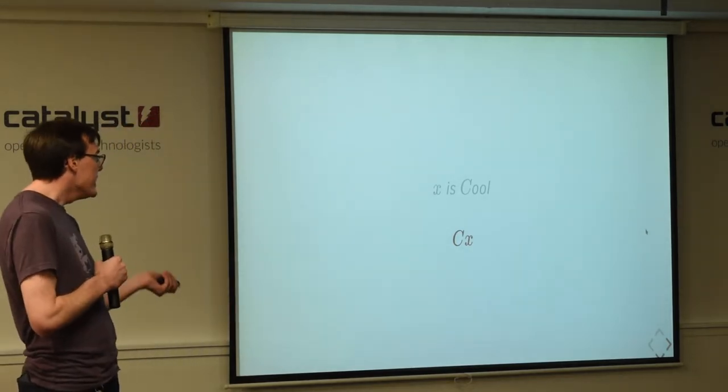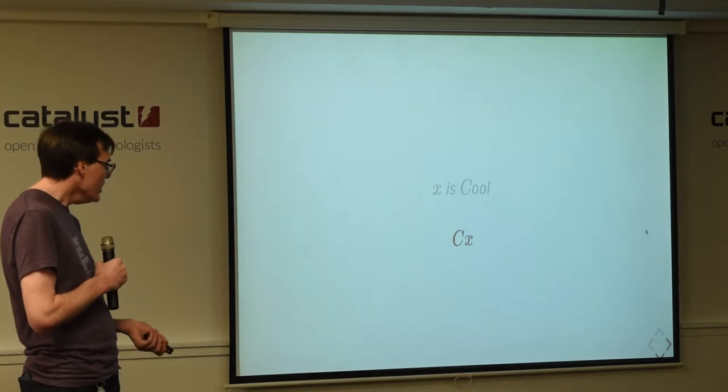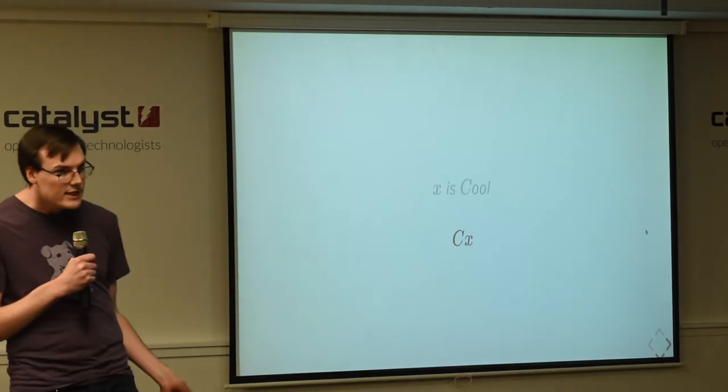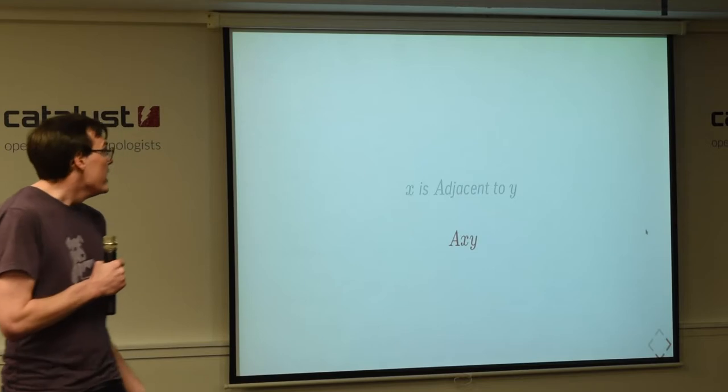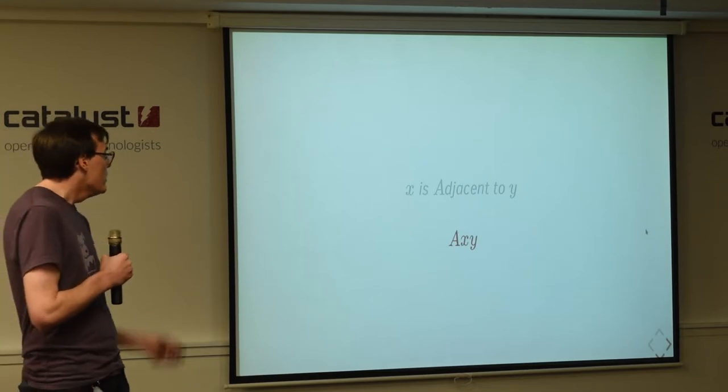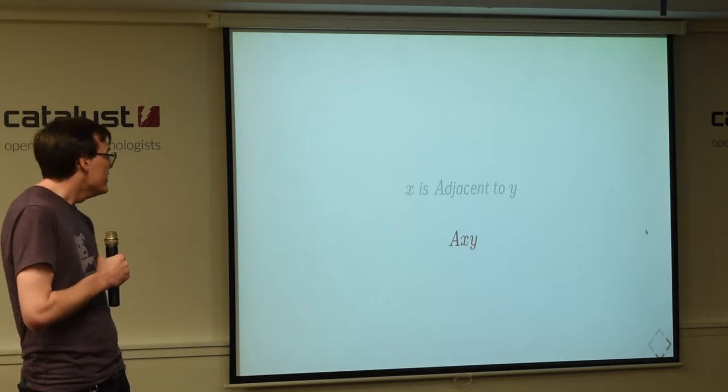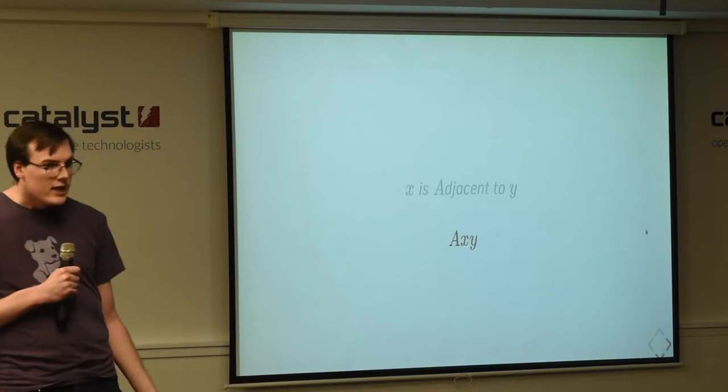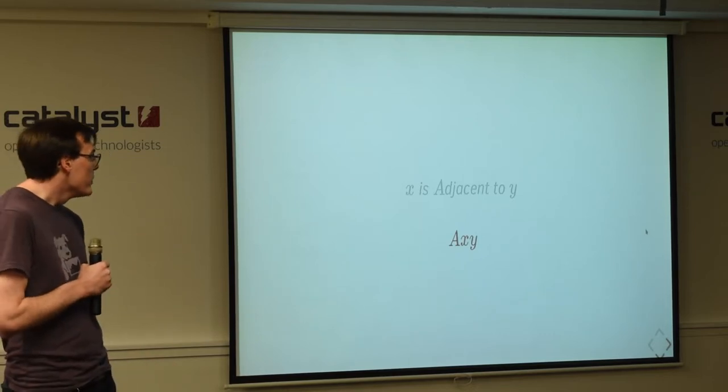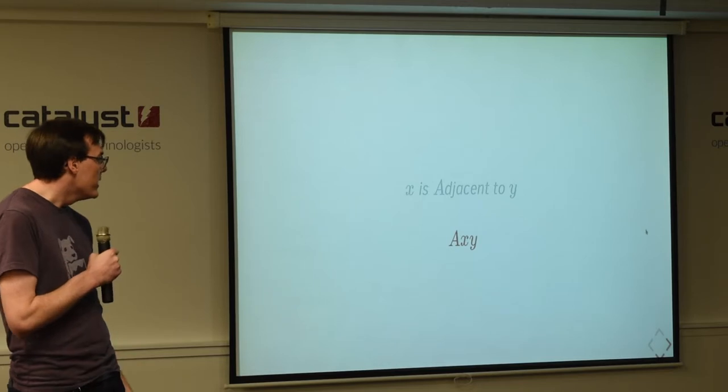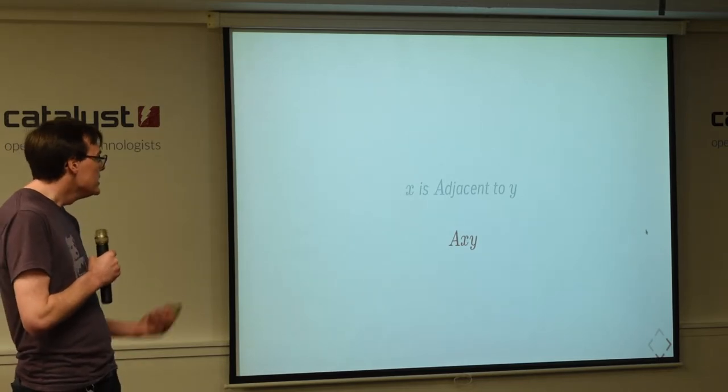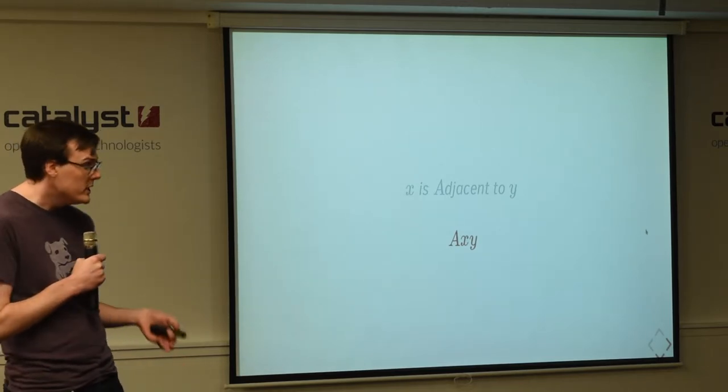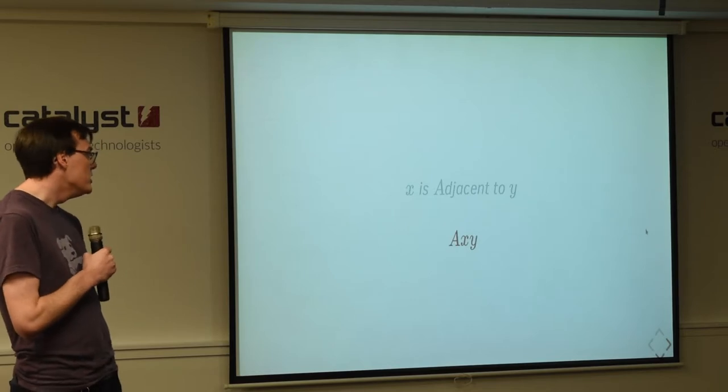And the third one is predicates. And so predicates define properties or relationships between objects. So for some object x, x is cool. And we write that as c of x. And for two objects x and y, if x is adjacent to y, we could write that as a xy. And so a is our predicate, x and y are our objects. And that's an assertion about the objects x and y in relation to each other.